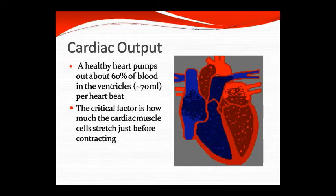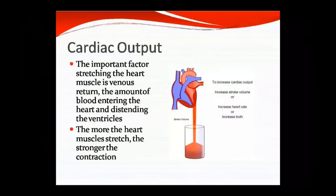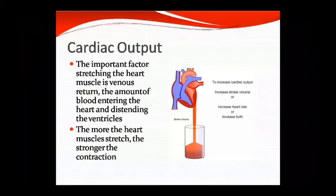In a healthy heart, about 60% of blood in the ventricles is pumped out — about 70 ml every heartbeat. A critical factor for cardiac output is cardiac muscle cells. The important factor is that heart muscle stretching is determined by venous return. The more blood entering and distending the ventricles, the more the heart muscle will stretch, resulting in a stronger contraction.